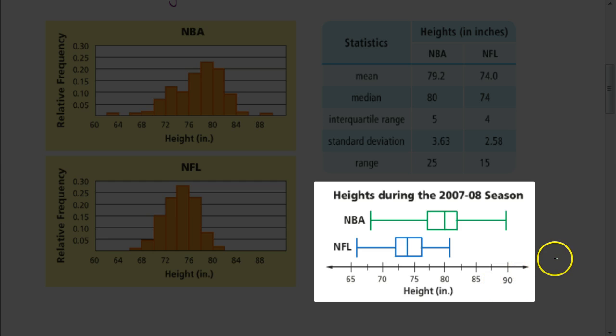One thing you could say is about 25% of NBA players, their heights are taller than any of the NFL players. So the upper 25% of the NBA players' heights are taller than any of the NFL players. You could even say that the lower 25% of the NBA players' heights are the same as 75% of the NFL players' heights. You could say that the middle 50% of the NBA players is about the same as the upper 25% of the NFL players' heights. So you can see that there's a lot of ways we can compare percentages by looking at the box plots.